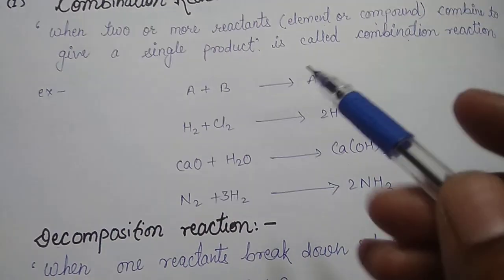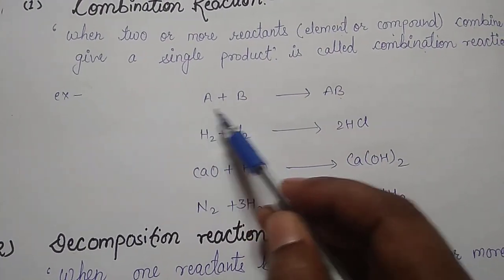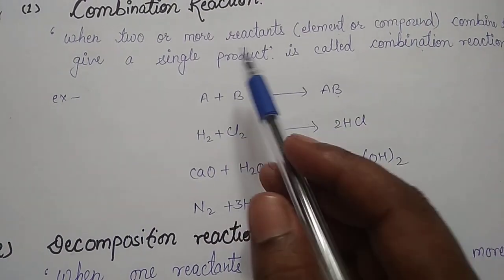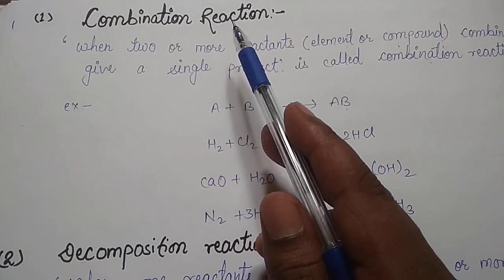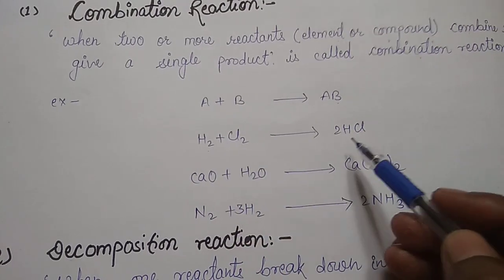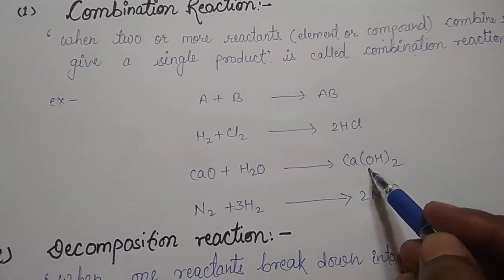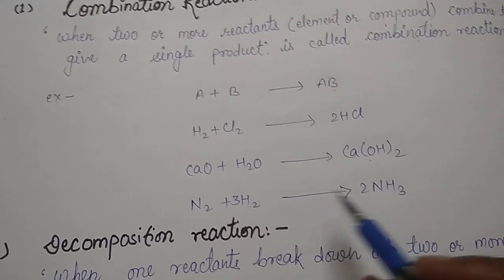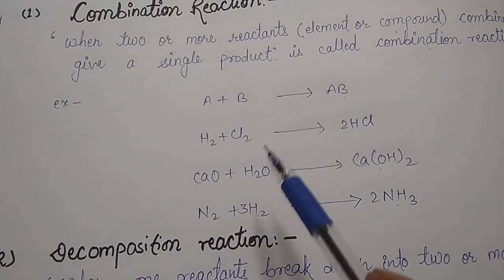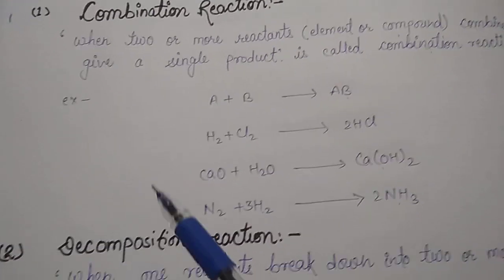Symbolically we can write it as A plus B gives a single product. Whenever two reactants combine and give a single product, it is a combination reaction. For example: hydrogen plus chlorine gives a single product; calcium oxide plus water gives a single product; nitrogen plus hydrogen gives ammonia — a single product. Whenever two or more reactants combine and produce a single product, that will be a combination reaction.